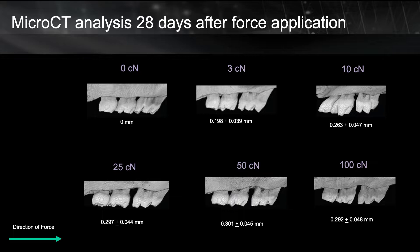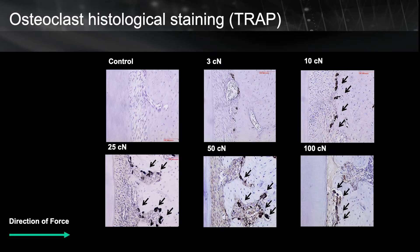That stimulated us to go to the next step and investigate the histological sections from these teeth to see what happens. We looked at the number of osteoclasts. As we increased the magnitude of the force, the number of osteoclasts started to increase. However, when reaching 25 centinewton and above, it seems the number of osteoclasts does not increase further.